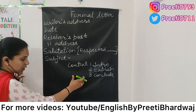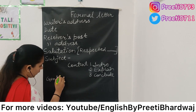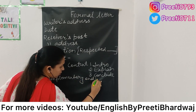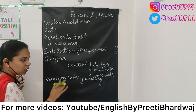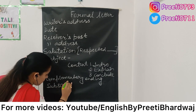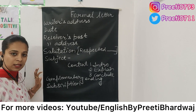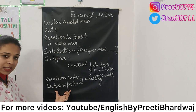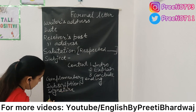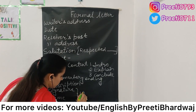After finishing the content, we leave a line and give a complimentary ending. Complimentary ending means we say thank you to that person — for example, we write 'Thanking you'. After the complimentary ending we leave a line and write the subscription — for example, 'Yours truly', 'Yours faithfully', or 'Yours sincerely'. After writing the subscription, the writer will put his or her signature and then write his or her name.